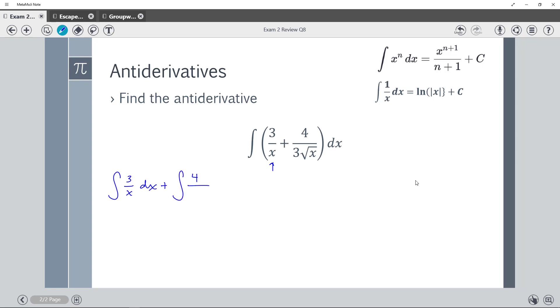So 4 over 3 square root of x dx. I could actually bring the 3 out front because it's like saying 3 over 1.